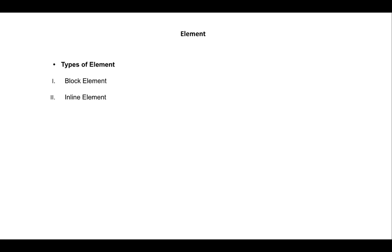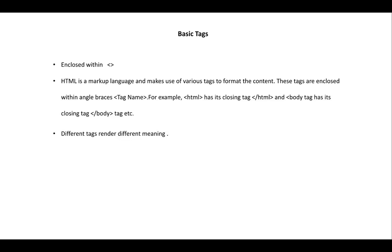There are two types of elements: block elements and inline elements. A block element takes the full width of the webpage. When you get started with CSS it will be clearer. Just keep in mind that for elements you have block elements and inline elements. We're going to get started with some basic tags — the HTML tag, the body tag, and the head tag — and different tags render different meanings.